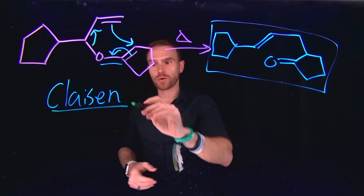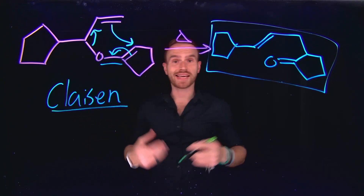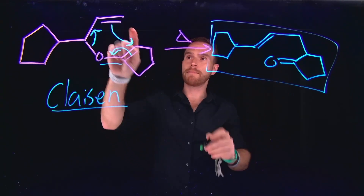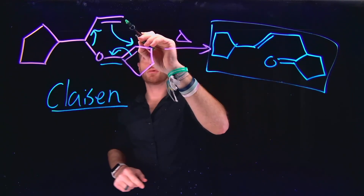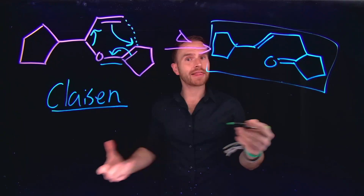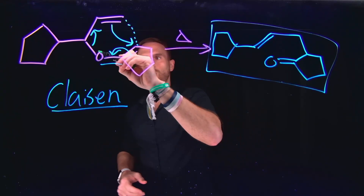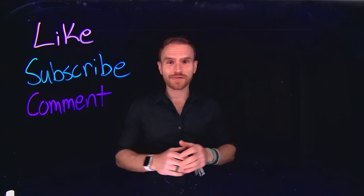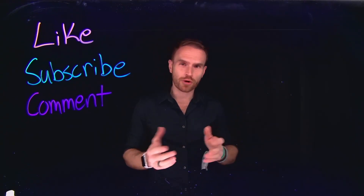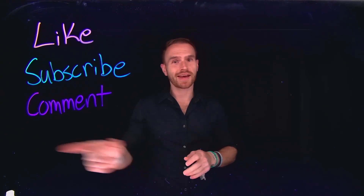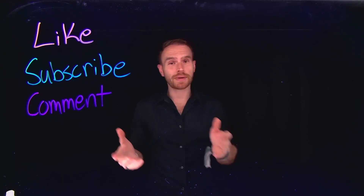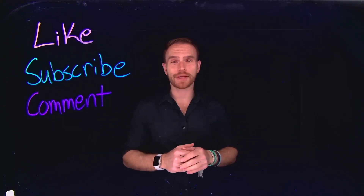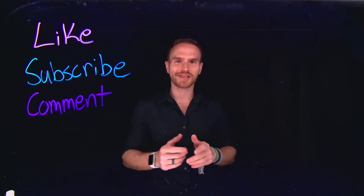Because a Claisen rearrangement is a sigmatropic rearrangement, we knew that we're making a new sigma bond at this location and breaking an old sigma bond at this location. If you enjoyed today's video, make sure to subscribe to my channel for more chemistry content, and comment below if you have any questions. I'll see you in the next video.